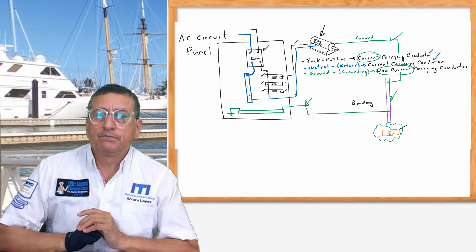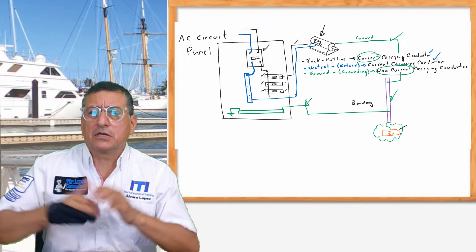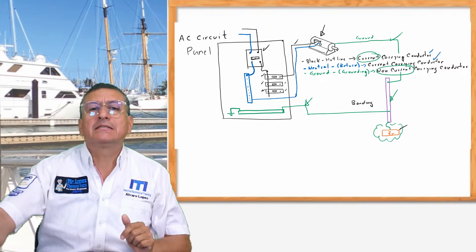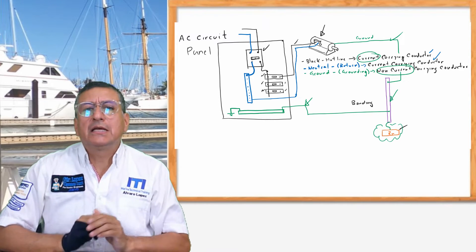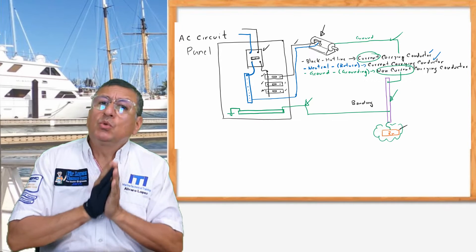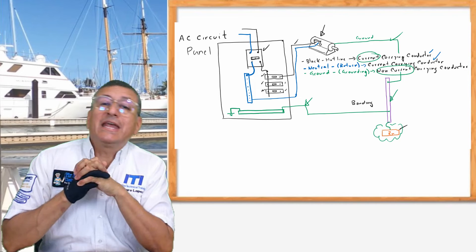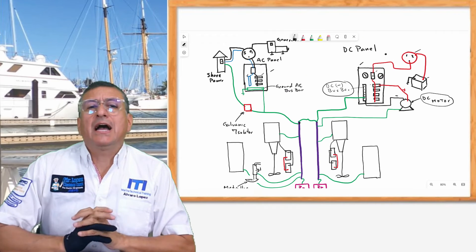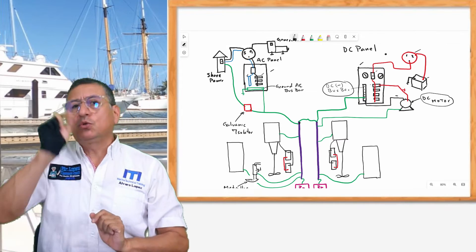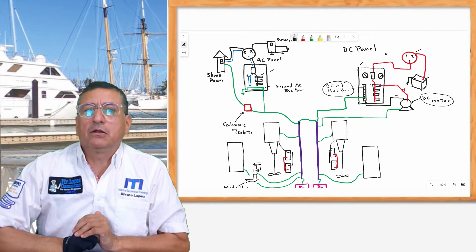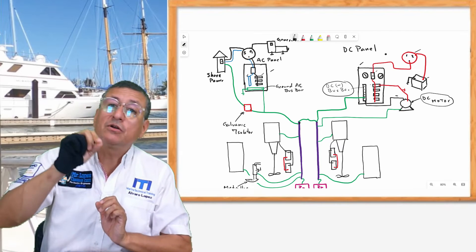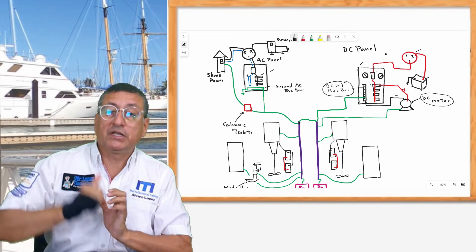Mr. Lopez, I have a question. I have a battery charger or inverter with a metallic case. Where should that metallic case be connected — to the ground bus bar on the AC panel or to the negative bus bar on the DC panel? My recommendation is that the metallic case of those equipment should be connected to the AC ground bus bar on the AC panel, and that bus bar should be connected to the bonding according to the diagram we have on the board.